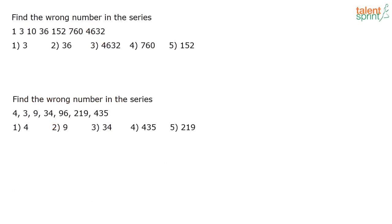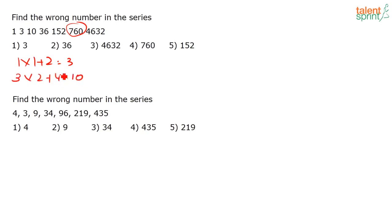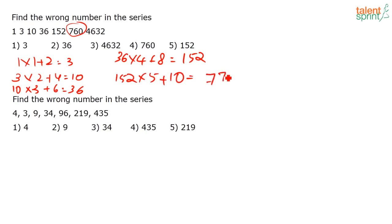Find the wrong number: 1, 3, 10, 36, 152, 760 (with 760 potentially written as 770). Pattern: 1×1 + 2 = 3; 3×2 + 4 = 10; 10×3 + 6 = 36; 36×4 + 8 = 152; 152×5 + 10 = 770. The given number 760 is wrong — it should be 770.